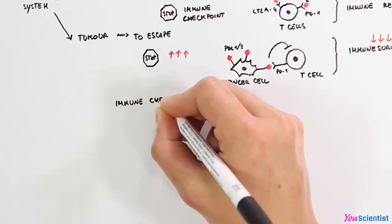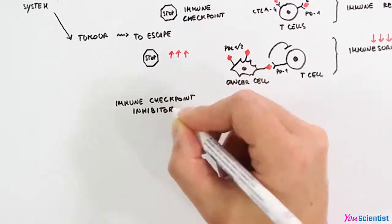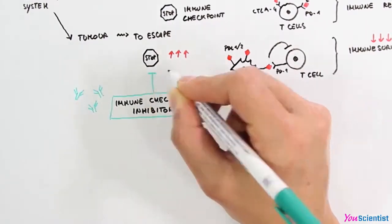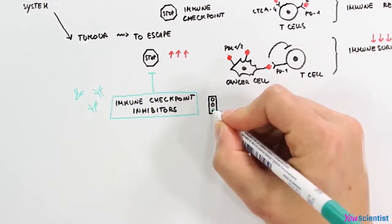Immune checkpoint inhibitors are special monoclonal antibodies able to inhibit the stop signals, thus restoring the anti-tumor activity of the immune system.